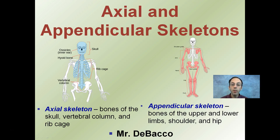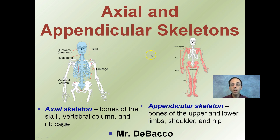This is a brief overview of the axial and appendicular skeletons of the human body. The axial skeleton consists of bones of the skull, vertebral column, and ribcage, seen here highlighted in blue. We'll spend more time in other videos learning about these in detail, but for right now just know this is part of the axial skeleton. In contrast, the appendicular skeleton consists of bones of the upper and lower limbs, shoulder, and hip, highlighted in the pink-red color here.